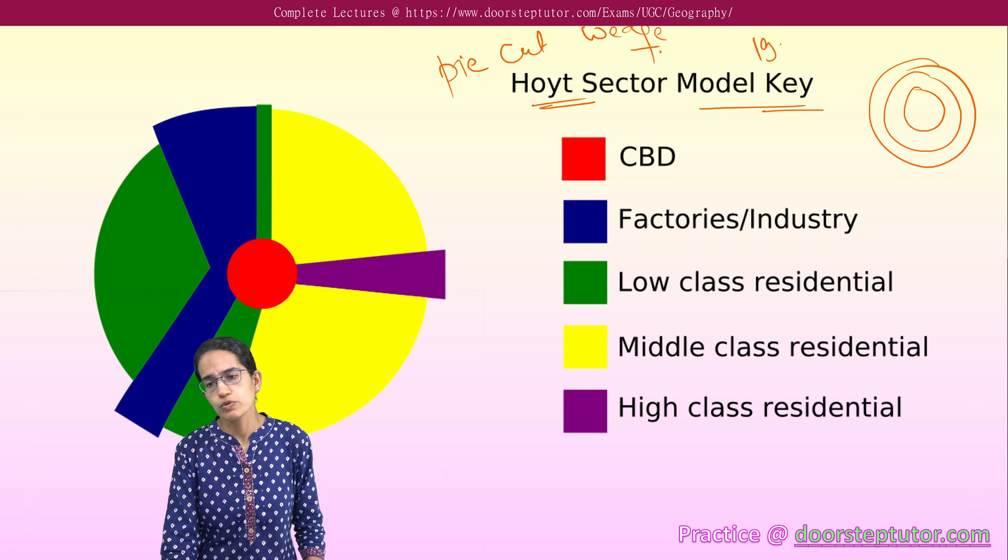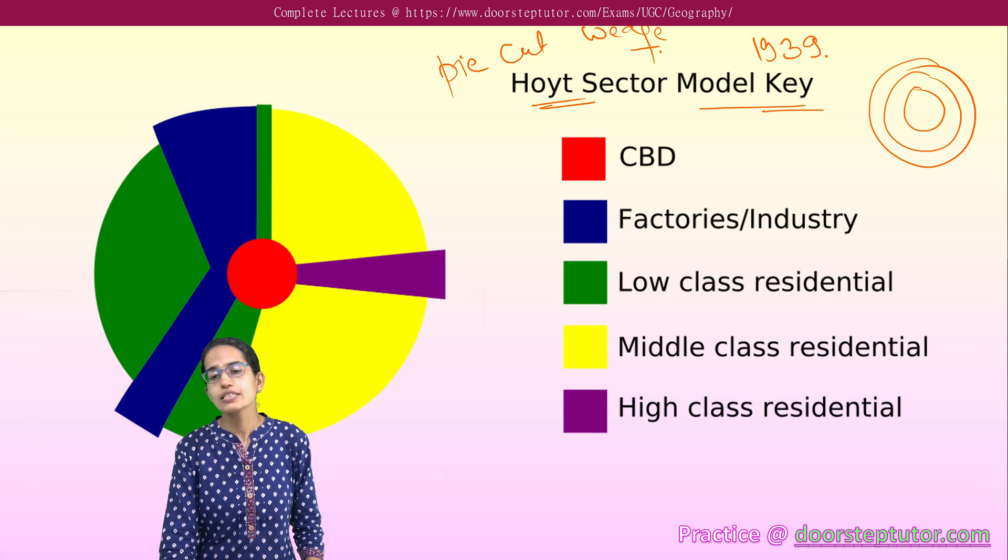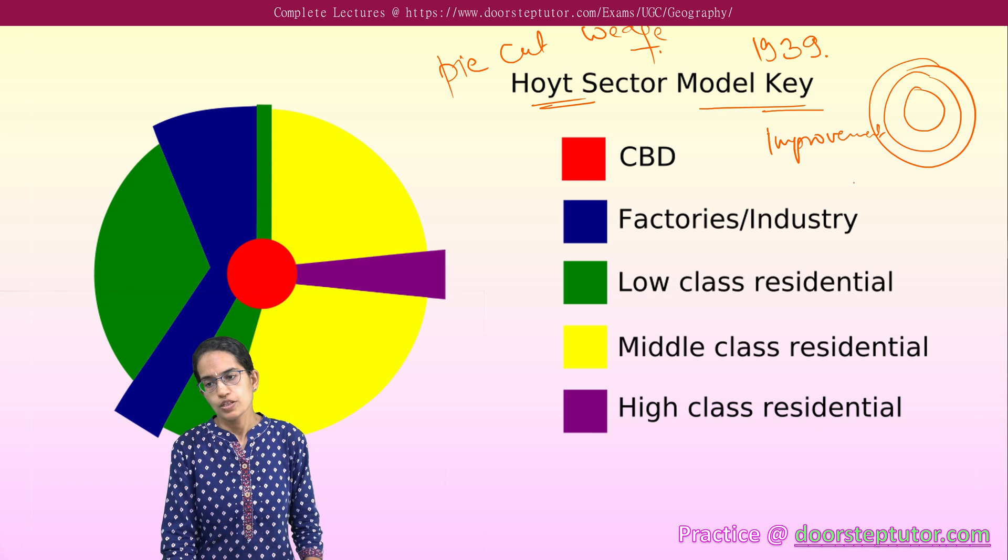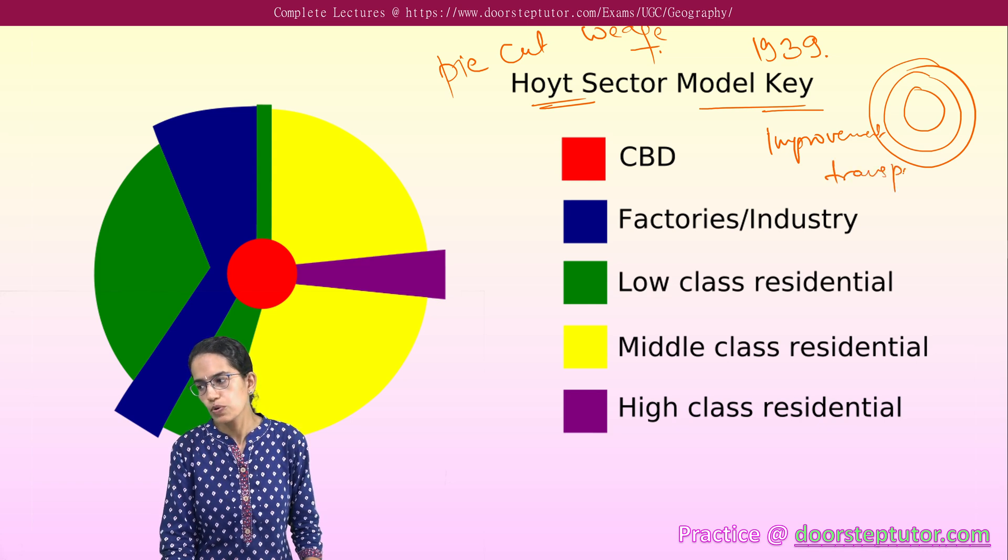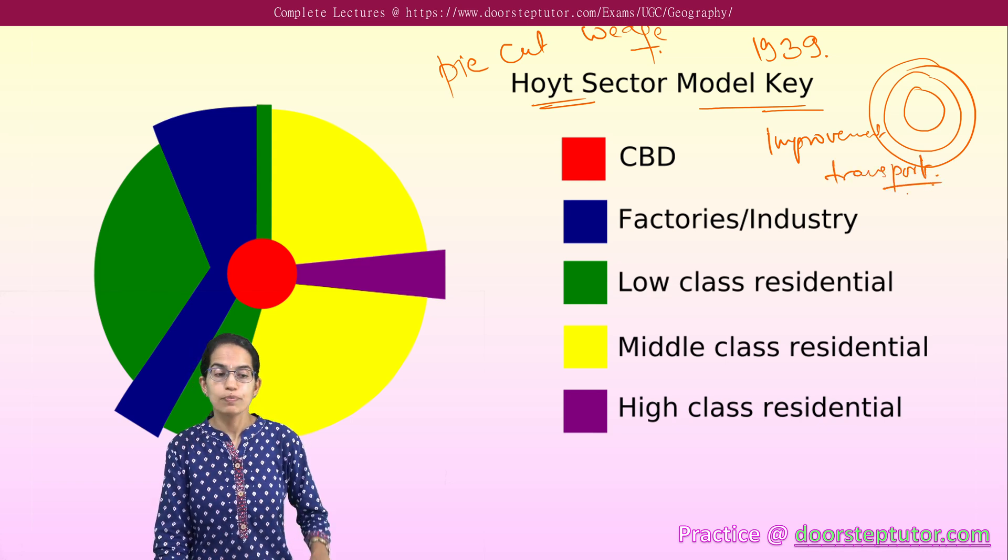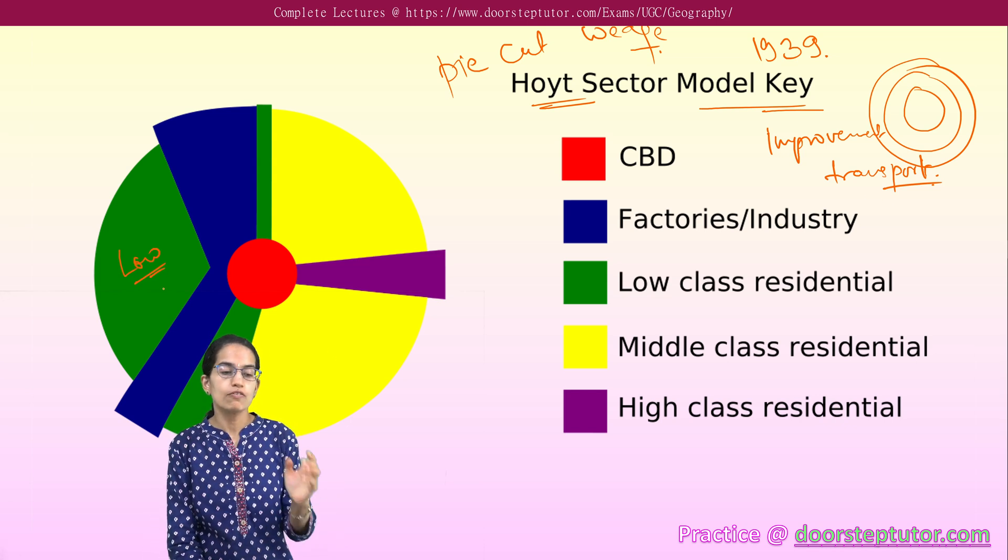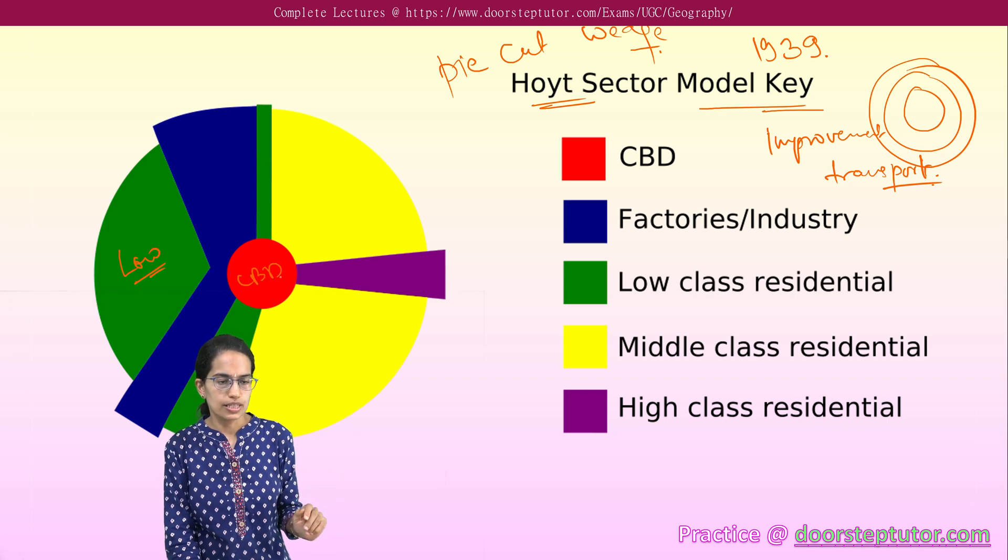This Hoyt model was given in 1939 and this came in with improvements in transport. As the transport improved, it said that there would be electric trolley and when there is electric trolley, the low income people can live far away from the CBD.